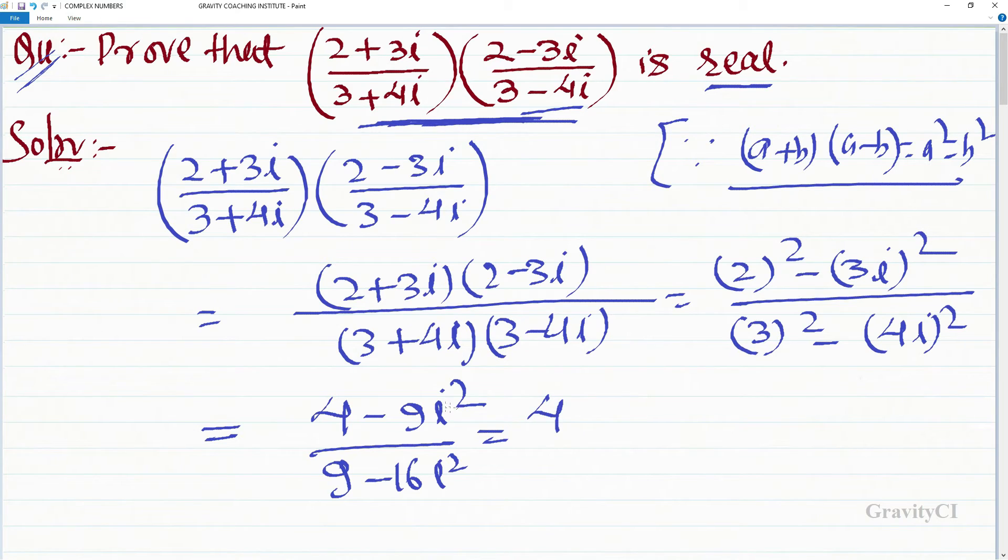Since iota square equals minus 1, this equals 4 minus 9 times minus 1 upon 9 minus 16 times minus 1, which equals 13 upon 25, which is real.